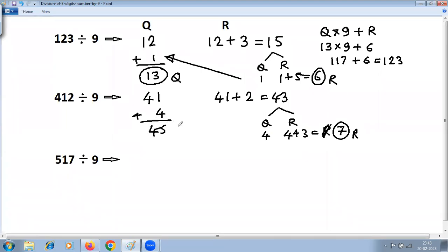Let's try this. Remove the last digit, so what remains is 51. Then take this 51 and add last digit, that is 7. 51 plus 7 is 58. 58 is above 9, so find quotient and remainder again.